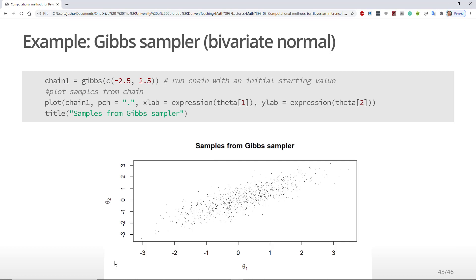In the next set of code, I run the chain 1,000 times using negative 2.5, 2.5 as a starting position. I then plot the results. I specify pch equal to the period to make small dots. I call the result a sand plot because it reminds me of sand.